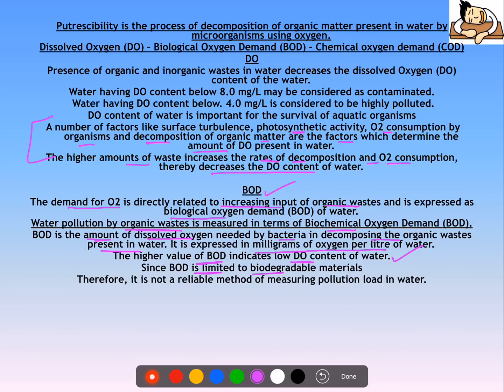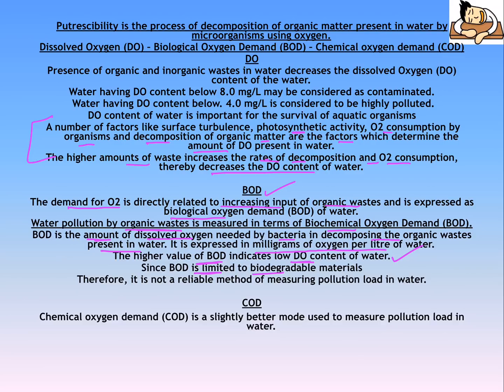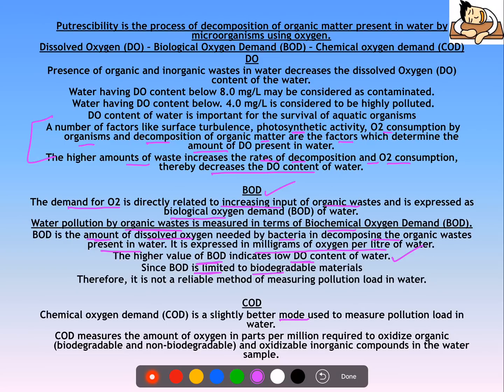The other concept is Chemical Oxygen Demand, or COD. It is a slightly better mode to measure pollution load in water because it measures the amount of oxygen in parts per million required to oxidize both biodegradable and non-biodegradable organic and oxidizable inorganic compounds in a water sample. So COD is a better measure than BOD.